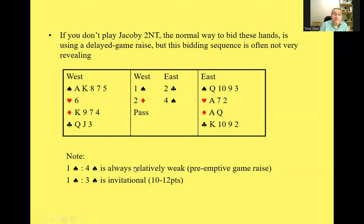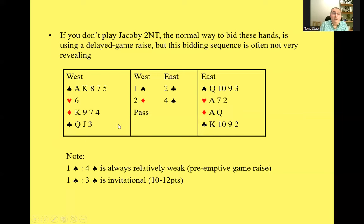These bidding sequences are not really useful if you have a fairly strong hand. One spade, four spades, for example, is always relatively weak — it's called the preemptive game raise: approaching seven losers but mainly based on distribution, not particularly strong in points. And one spade, three spades is also not suitable on a strong hand because that is invitational, showing 10 to 12 points, and it could be passed. So on hands like this, it's very useful to play Jacoby Two No Trump, and I do recommend you give it a try.